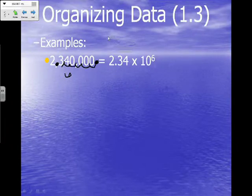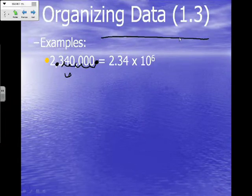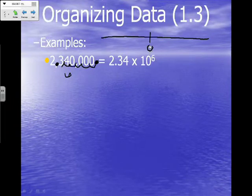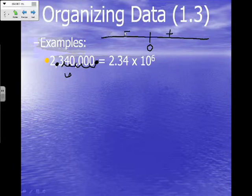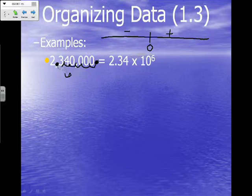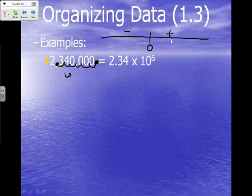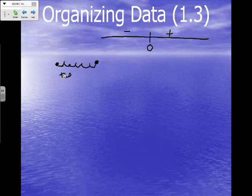Now, how do we know if that six is positive or negative? Think of a number line — right in the middle is zero, positive numbers are on the right, and negative numbers are on the left. We know we have six jumps, and we moved to the right going from the new decimal to the old decimal. That means we moved right on the number line, so we have a positive six. You don't have to put the positive sign — ten to the sixth is understood to be positive.